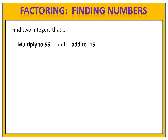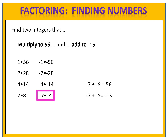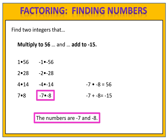Can you find two numbers that multiply to 56 and add to negative 15? Pause the video here. Possible candidates are 1 times 56, 2 times 28, 4 times 14, and 7 times 8, plus their negative counterparts: negative 1 times negative 56, negative 2 times negative 28, negative 4 times negative 14, and negative 7 times negative 8. You can also use the graphing calculator — enter 56 divided by x and scroll the table. Which pair adds to negative 15? Negative 7 and negative 8. Verify: negative 7 times negative 8 equals 56, and negative 7 plus negative 8 equals negative 15. The numbers are negative 7 and negative 8.